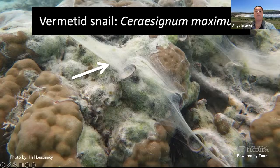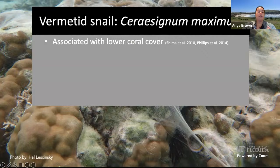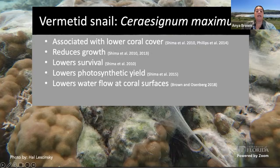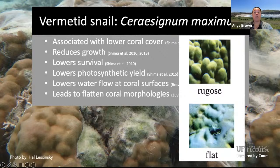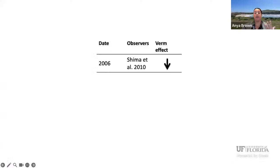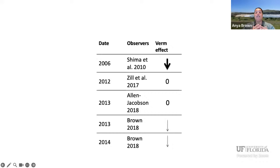It's this mucus net that's been implicated in negative effects on corals. We know it's associated with lower coral cover, reduces coral growth and coral survival, influences algal symbionts by lowering photosynthetic yields, and lowers water flow at coral surfaces — leading to a low-flow layer that can influence oxygen dynamics. It also leads to flattened coral morphology: instead of a rugose or bumpy texture, corals are flatter when the snails are present. It also has community effects: when the nets cover algae, it decreases herbivory.